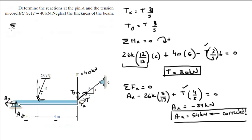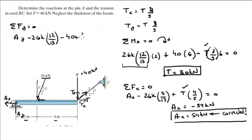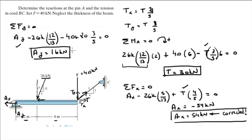Sum of the forces in Y equals 0. We have AY going up, minus 26k times 12/13 going down, minus 40 going down, plus 80 times 3/5 (the tension's Y component), all equal to 0. Solving for AY gives 16 kN going up. Final answers: tension is 80 kN, AX is 54 kN to the left, and AY is 16 kN upward.